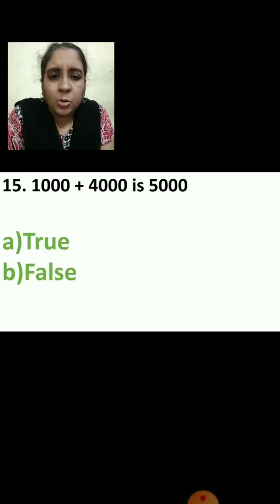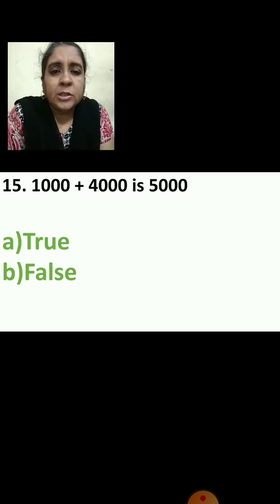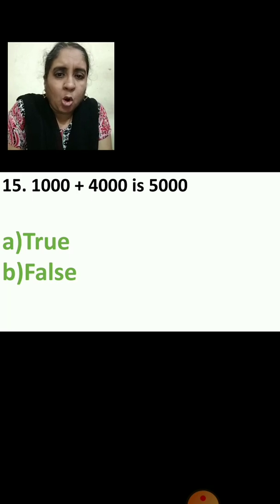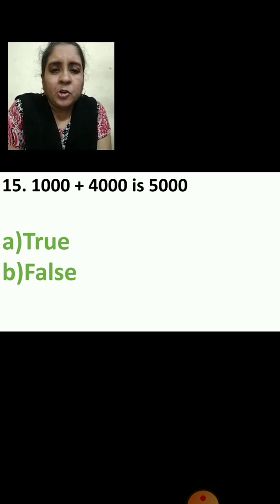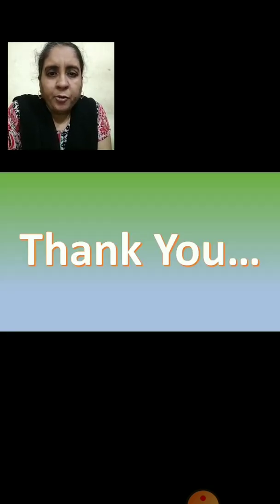15th question: 1,000 plus 4,000 is 5,000 — true or false? You have to add and find out the answer. Is it correct or not? When you add 1,000 plus 4,000, you get 5,000. So it is true. With this, we have completed the revision of all the questions.